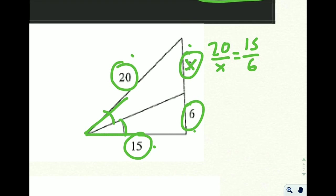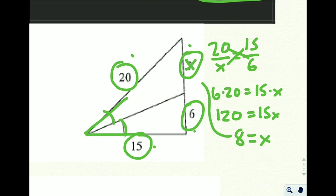And when we cross multiply, 6 times 20 is equal to 15 times x. 6 times 20, 6 times 2 is 12, so 6 times 20 is 120 equals 15x. Divide both sides by 15, and 120 divided by 15 is going to come out to 8. So we think that x is going to be 8.